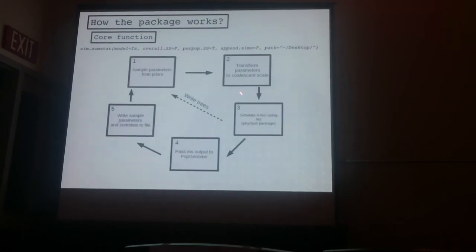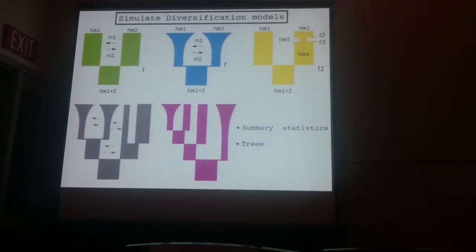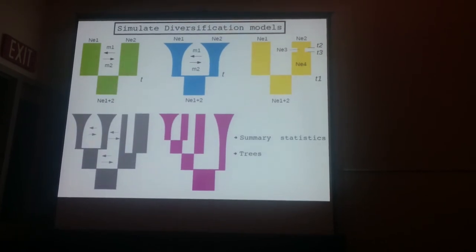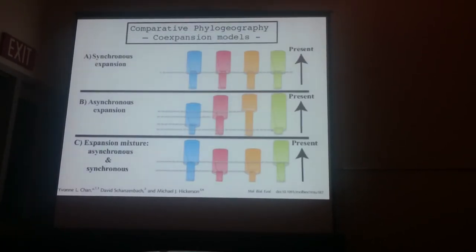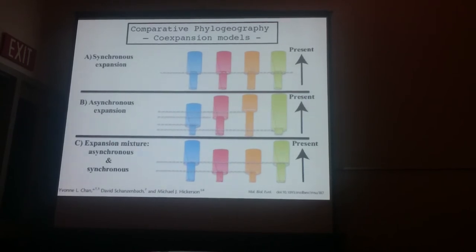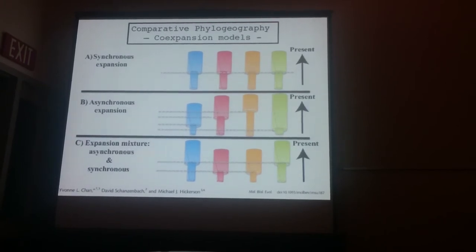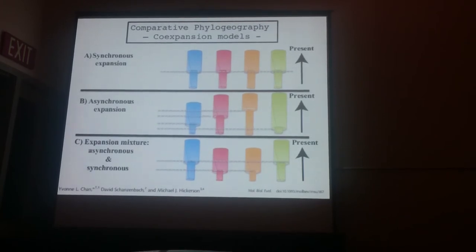You can also take a shortcut and write the coalescent trees. You can use that to build all these different models — here are some examples to simulate summary statistics and trees. One cool feature I have also implemented in this package is co-expansion models for comparative biogeography, where you can estimate the proportion of synchronous expansion in your data across multiple populations.